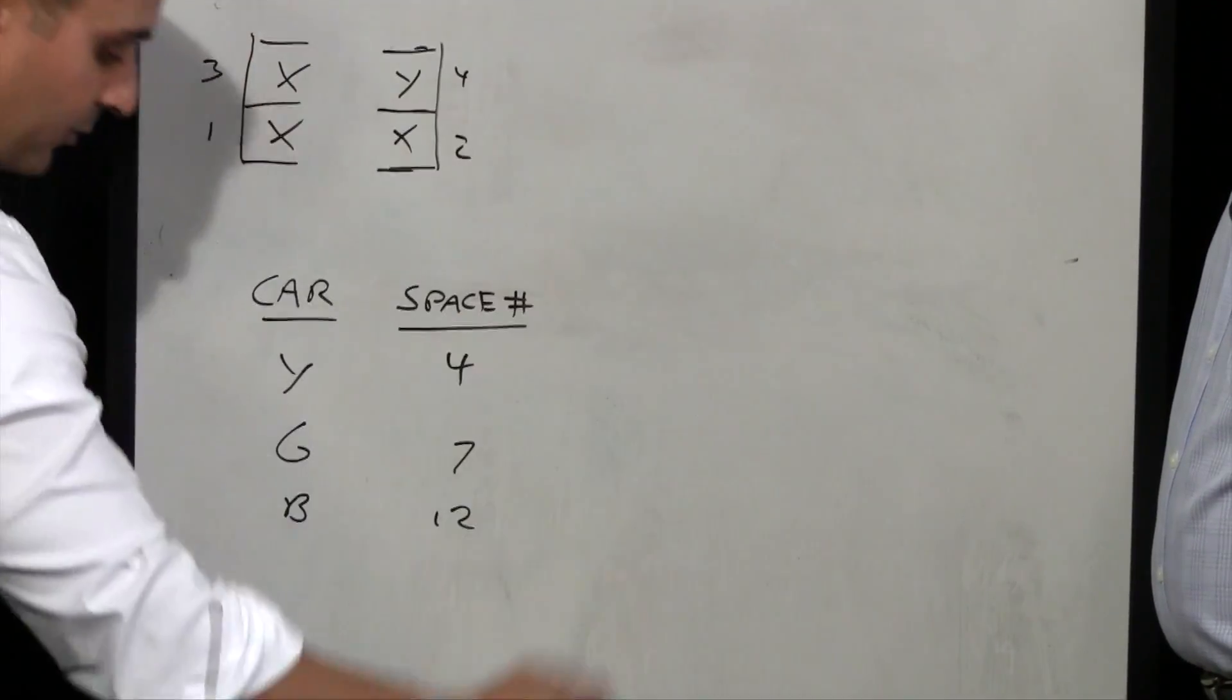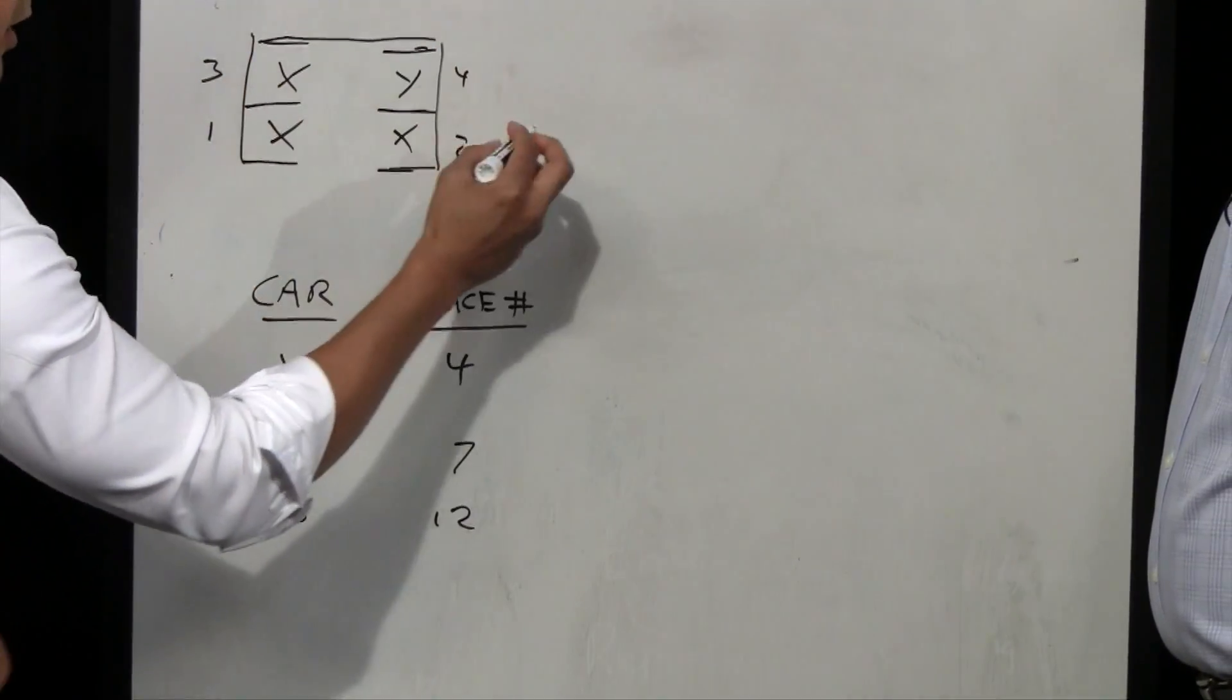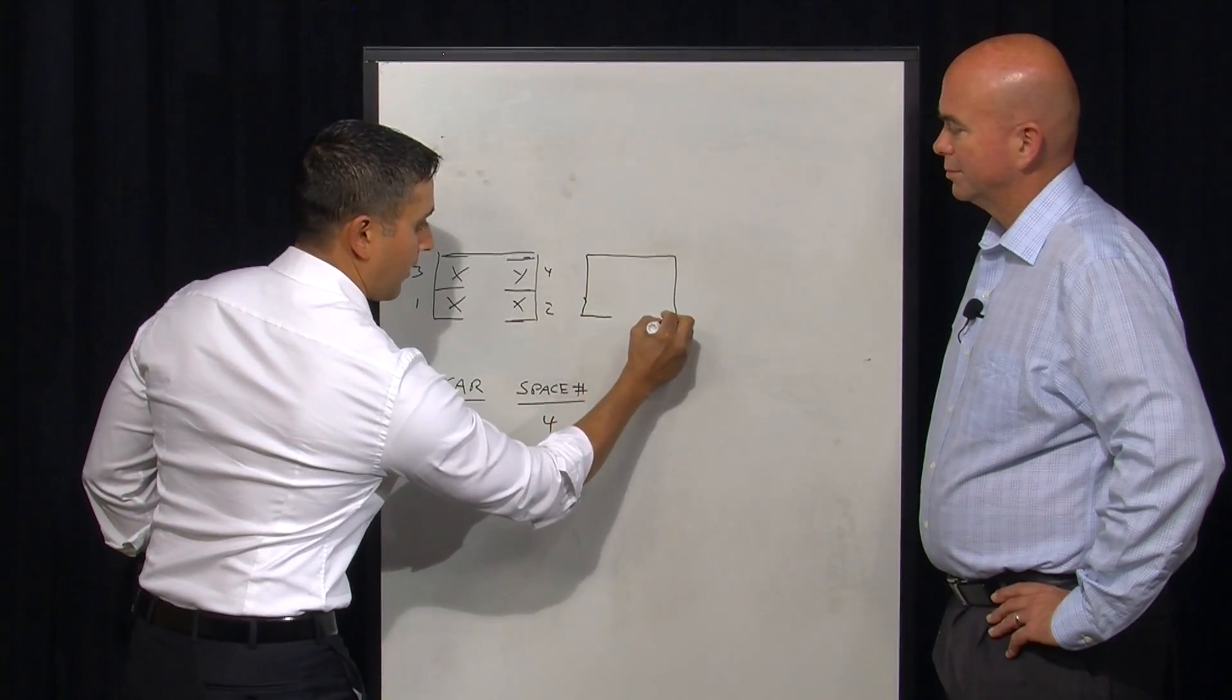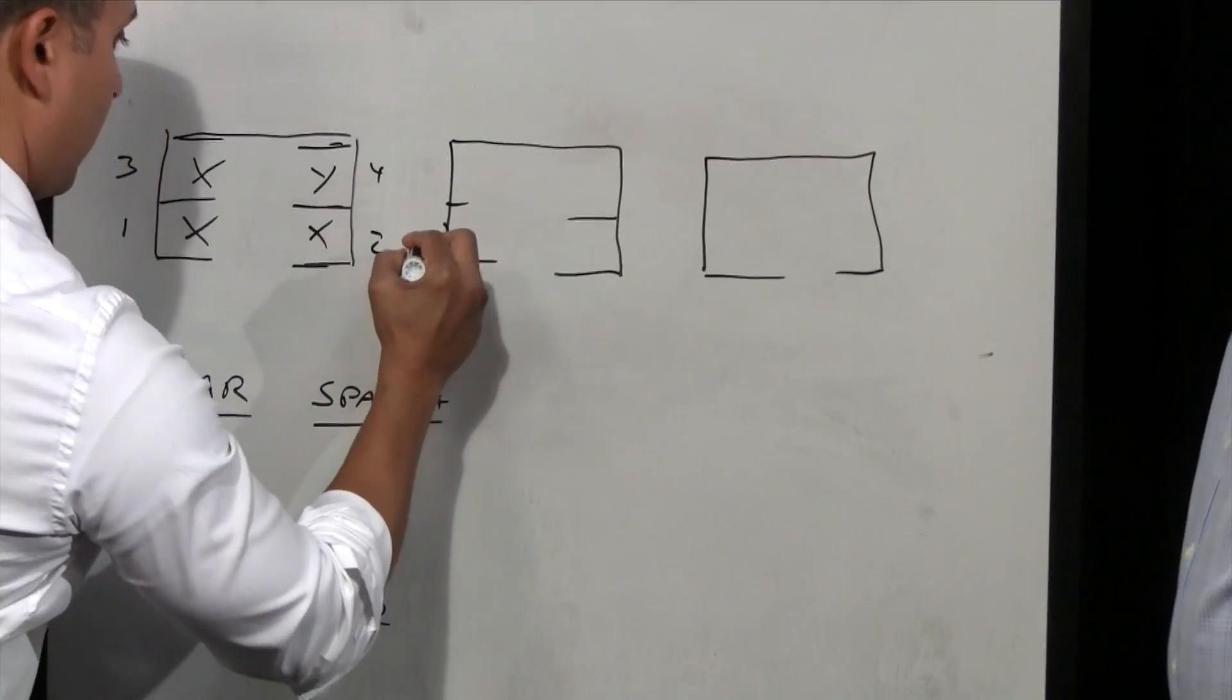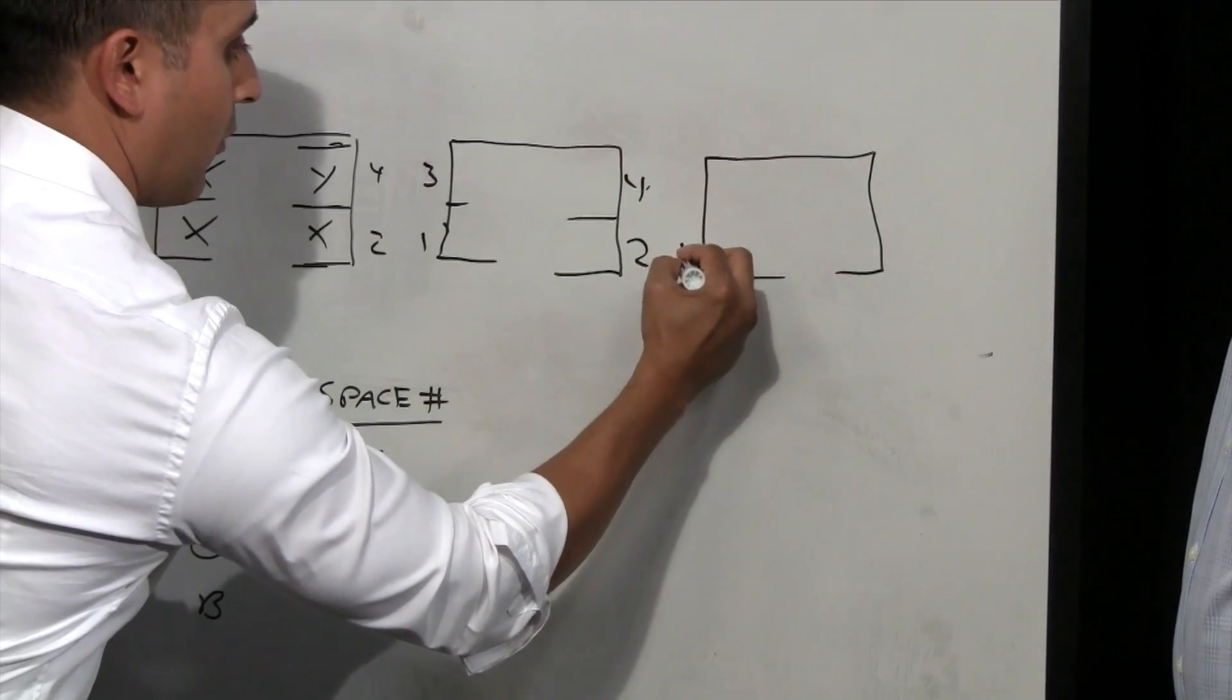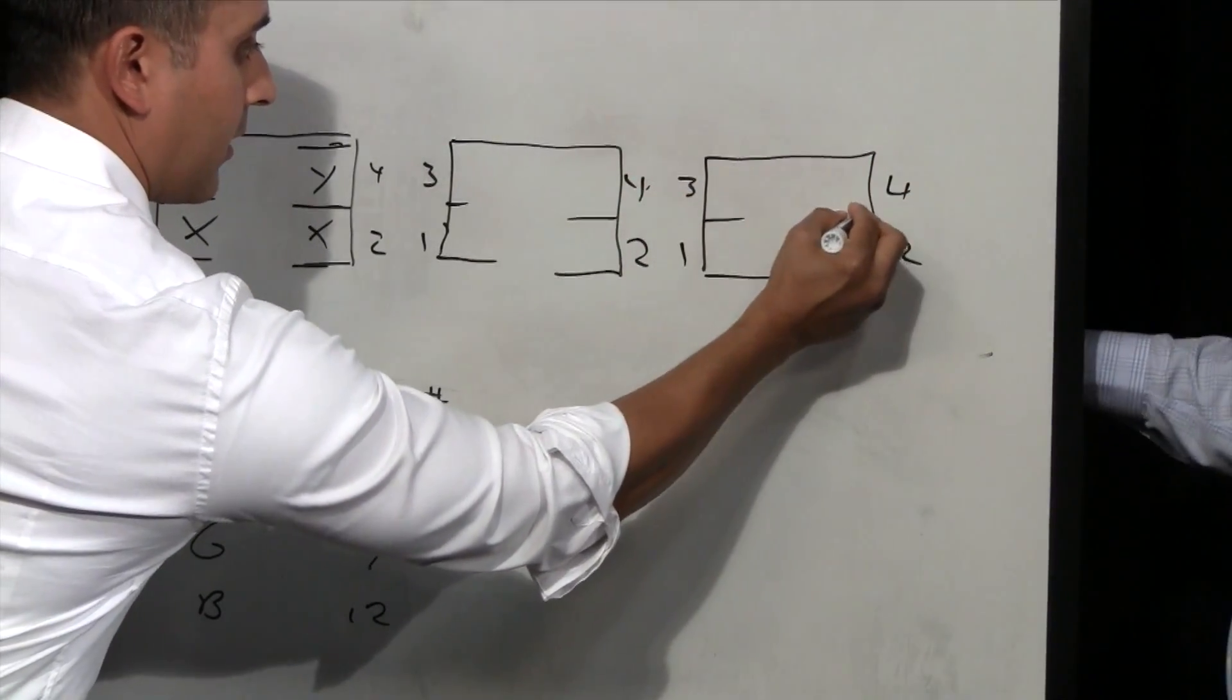The more efficient way is we have a couple other parking lots here. Let's basically split these things up. Let's make this just a single four car lot, another four car lot, and another four car lot.